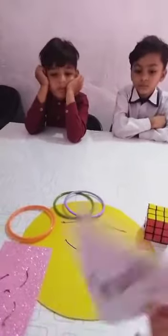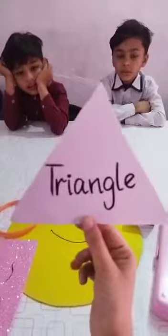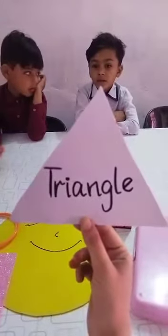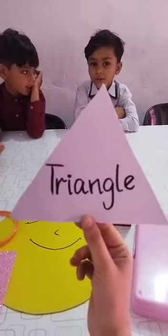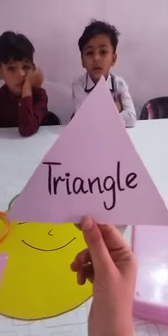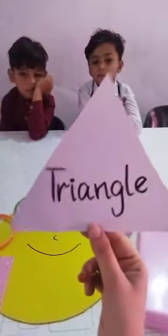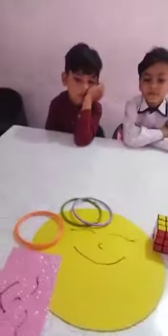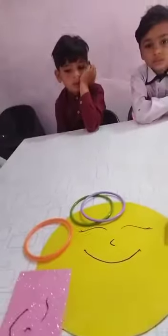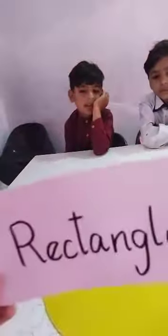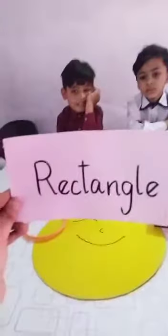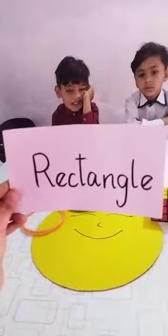Now tell me, Hussein — which shape is this? Triangle. Very good. Okay, now it's Kayaan's turn. Kayaan, you tell me — which shape is this?